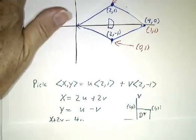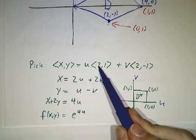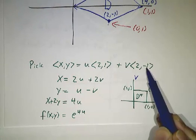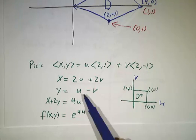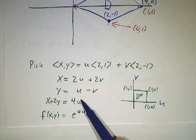Now if you write this out, you write it out coordinate by coordinate, you get that x is 2u plus 2v, and y is u minus v. And x plus 2y, the v's cancel, you get that that's 4u.